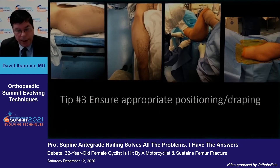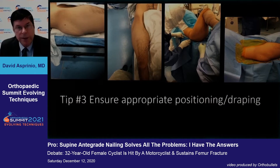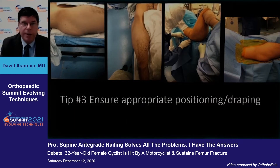Whether supine on a flat-top table or supine on a fracture table, the patient must be shifted to the involved side and draped so as to allow access to the trochanteric or piriformis entry site. This is particularly important in larger patients.